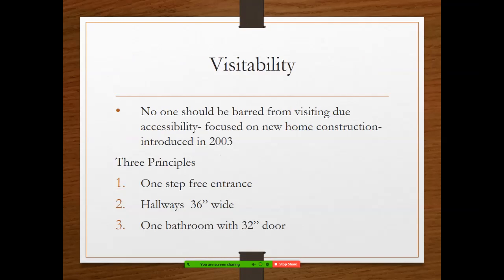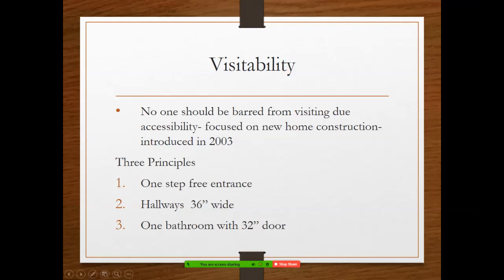From universal design came another concept in 2003 — that nobody should be barred from visiting due to accessibility. Pretty much focused on being able to visit friends' and family's homes. If our parents become wheelchair dependent, is our home so old they can't get through the doorway, or are there too many steps, or can they get into the bathroom? So architects, engineers, and construction people decided on these principles of visitability — new home construction designed with one step-free entrance, hallways three feet wide (36 inches), and one bathroom with a 32-inch door.